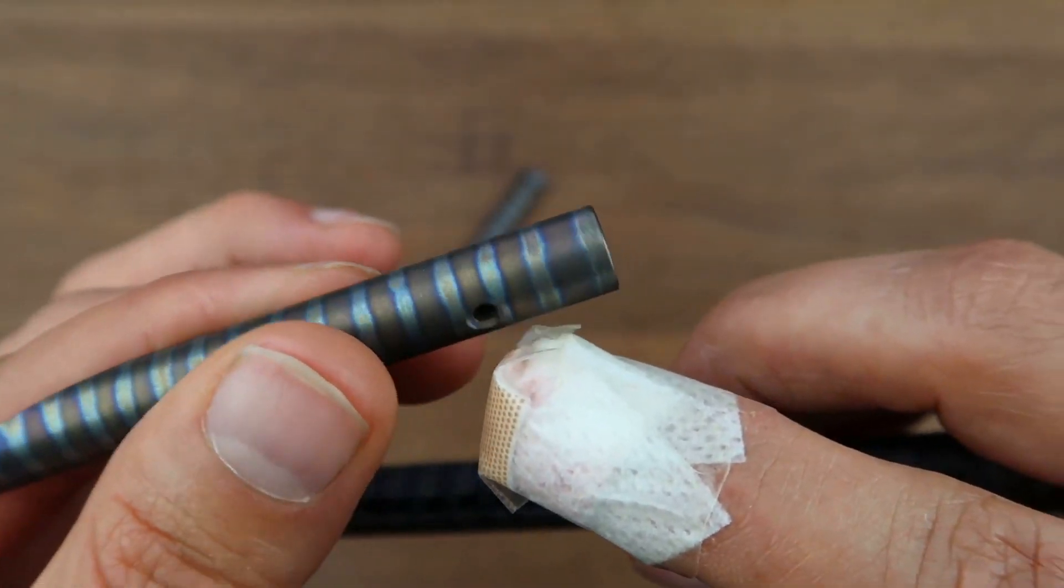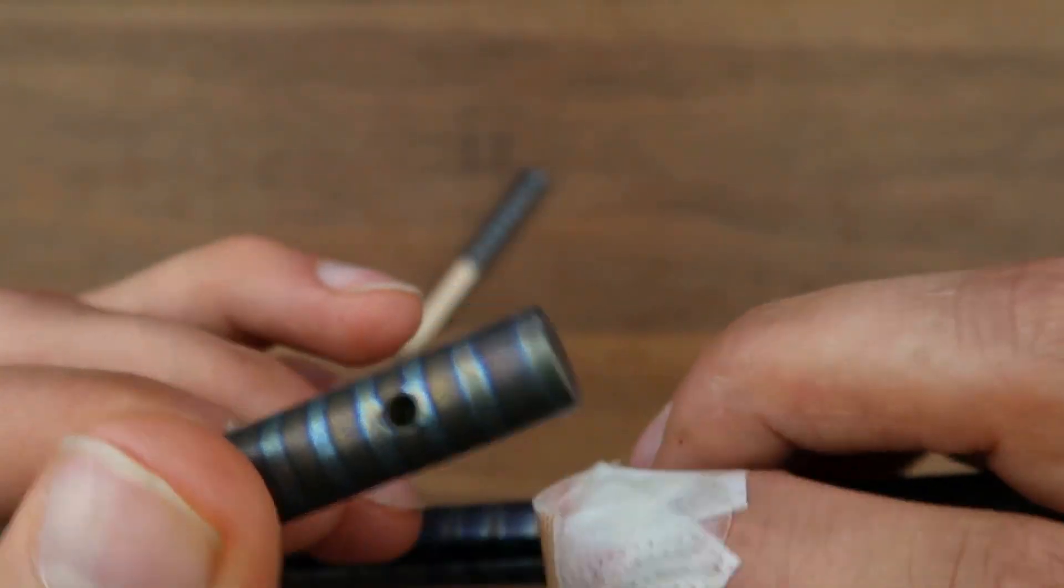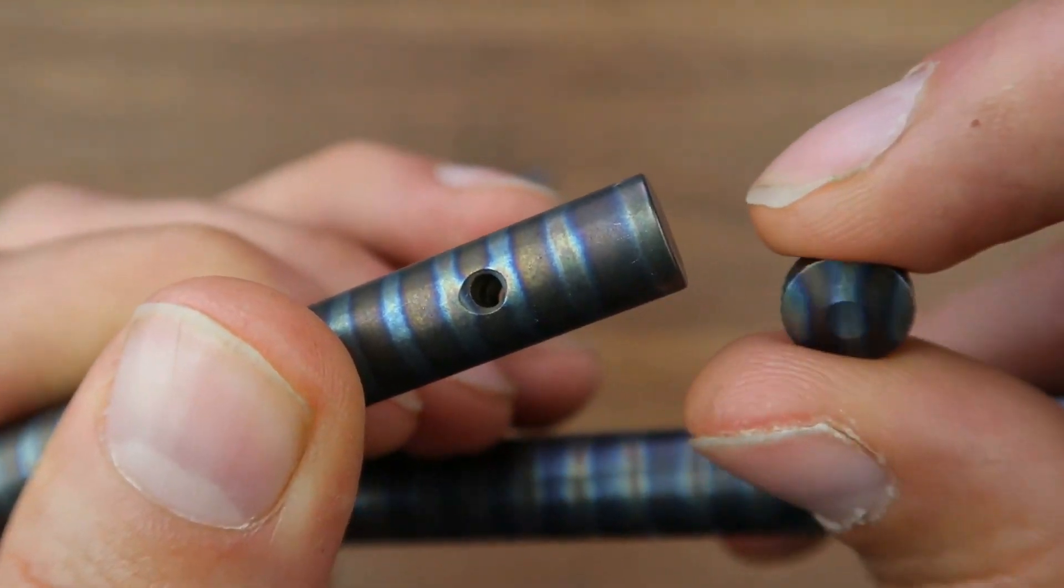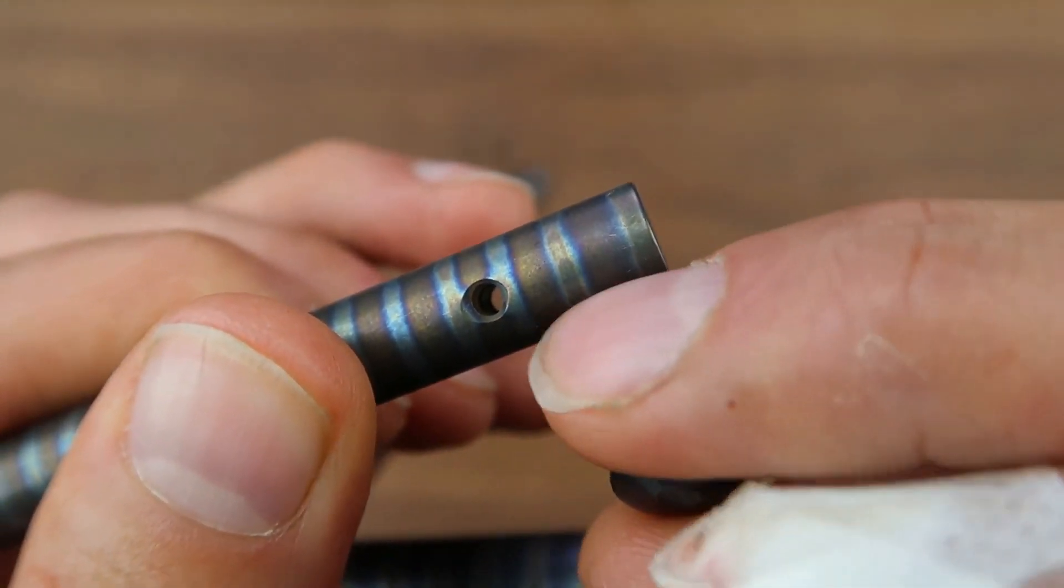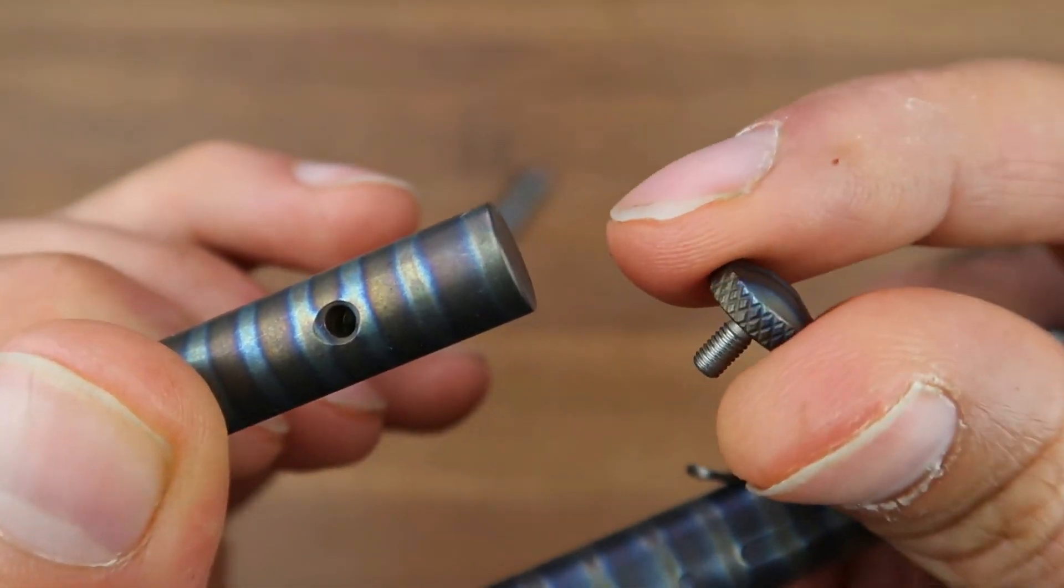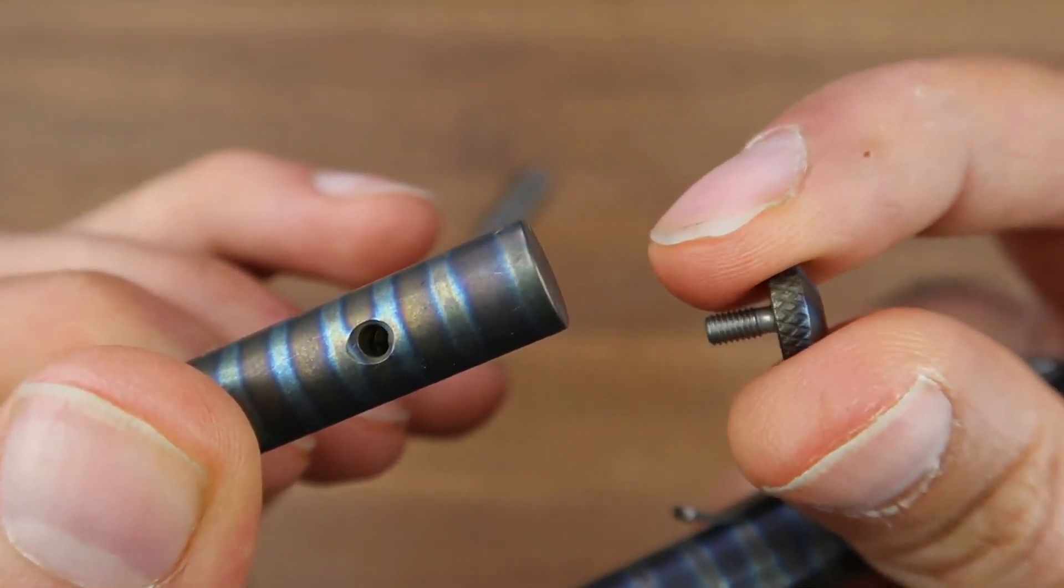You cannot use the screw on this side. Very important: don't force it, don't try too hard because you're going to shear off the threads on this, which you don't want.